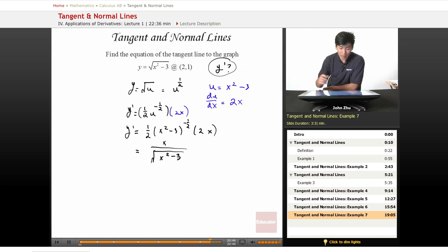But what is the slope at this expression? This is the derivative. Well, we're looking for the slope. So at x equals 2, y prime equals 2 over square root of 2 squared minus 3.